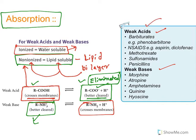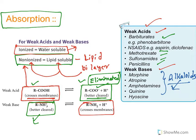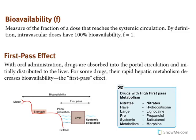Most drugs are either weak acids or weak bases. Weak acids include barbiturates (derivatives of barbituric acid), aspirin (acetylsalicylic acid), methotrexate, sulfonamides, and penicillin — all weak acids. Weak bases are mostly alkaloid in nature — the name 'alkaloid' itself indicates base. Alkaloids like morphine, atropine, amphetamine, quinine, and hyoscine are all weak bases.